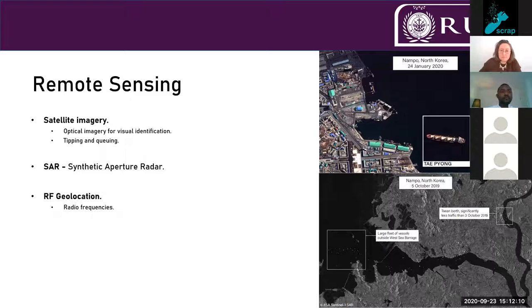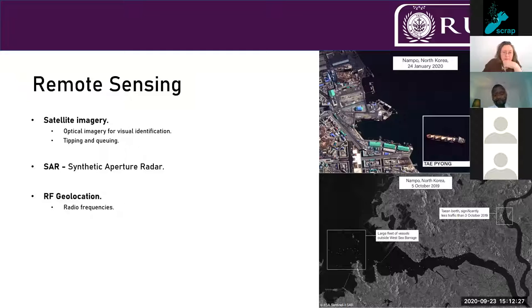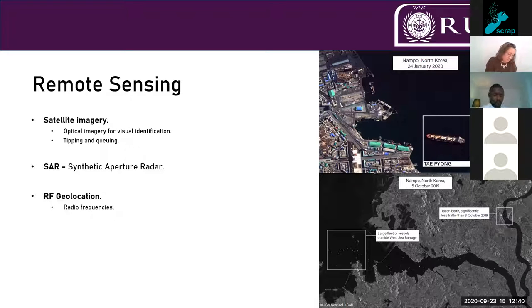We've really tried to branch out our capabilities. We don't just use optical imagery — the full colour images you see — but we also try and use other data sources such as synthetic aperture radar, which is an amazing tool. It can shoot at times when other satellites can't due to light conditions, it can see through cloud, and it is available open source. We're additionally trying to branch out into other new areas of tracking vessels such as radio frequency geolocation.